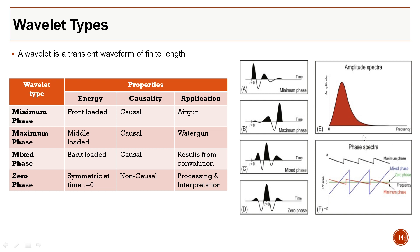The phase spectra can be displayed as wrapped or unwrapped. Maximum phase, mixed phase, zero phase (green), and minimum phase (red) are all shown here with different phase spectra. These are the different types of wavelets, all very useful in processing.